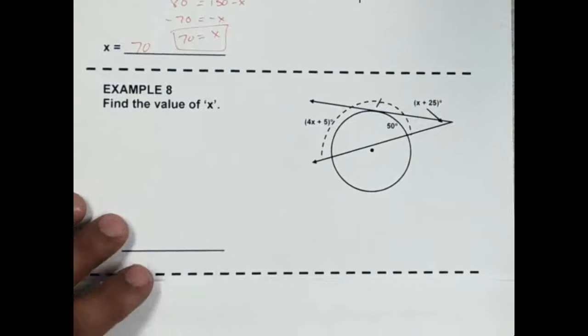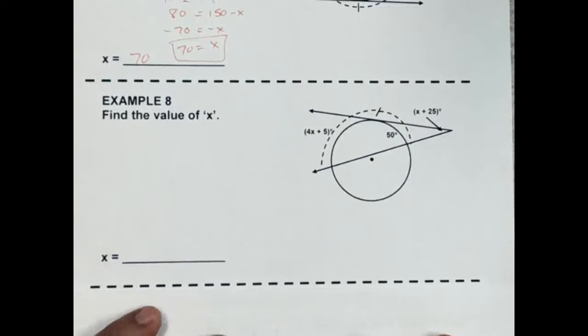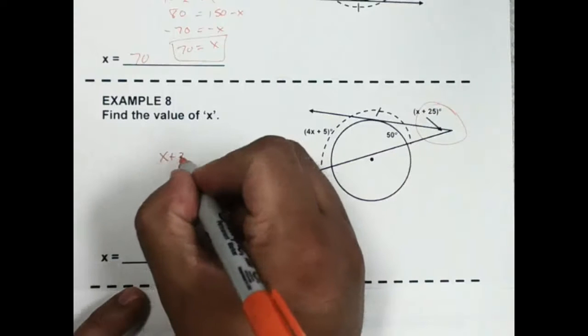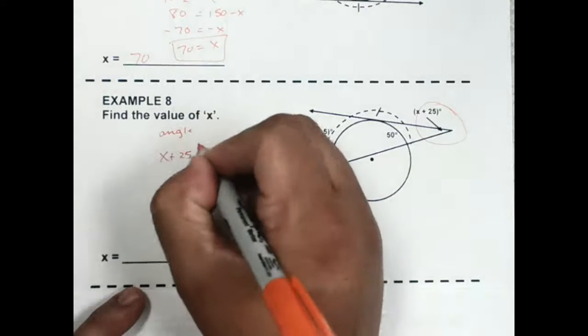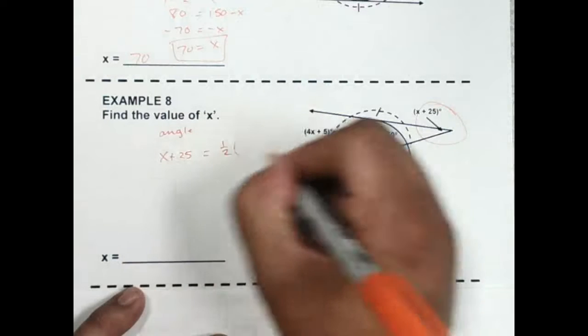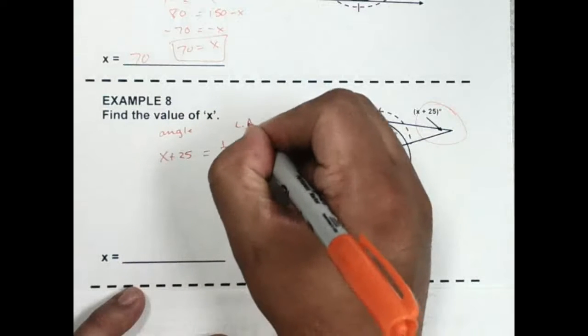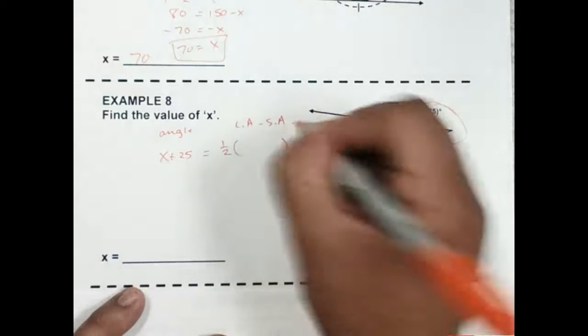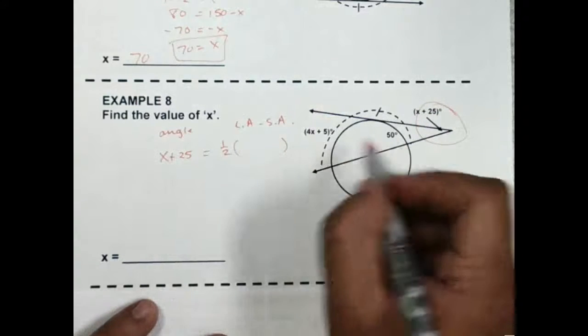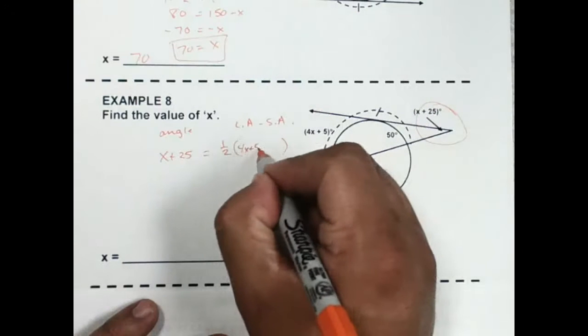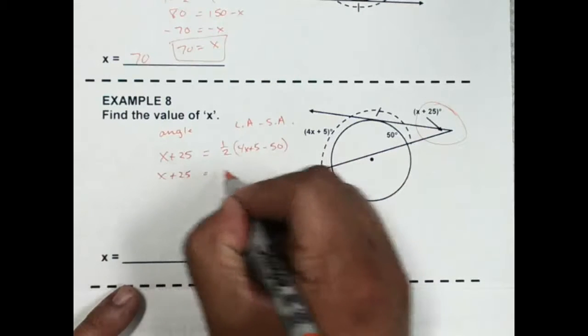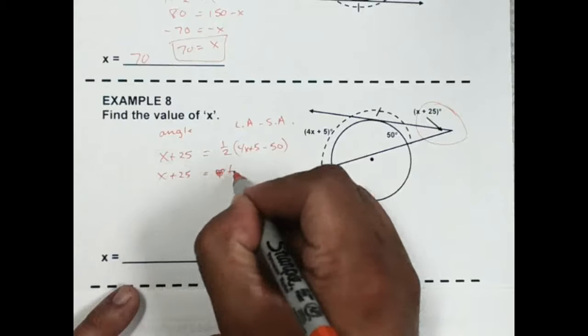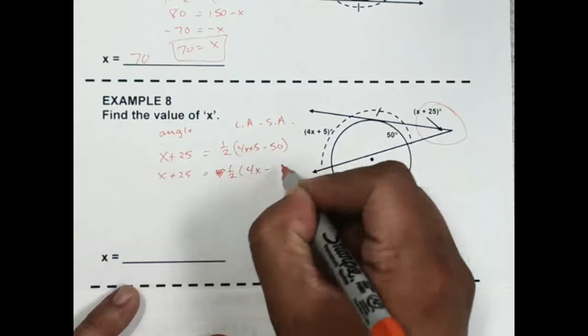Number eight. Same idea. Notice, look at where the angle's at. It's on the exterior. So that means x plus 25, that's my angle. So x plus 25 is equal to 1 half the larger arc minus the smaller arc. So that is going to be 4x plus 5 minus 50. So x plus 25 is equal to 1 half 4x minus 45.